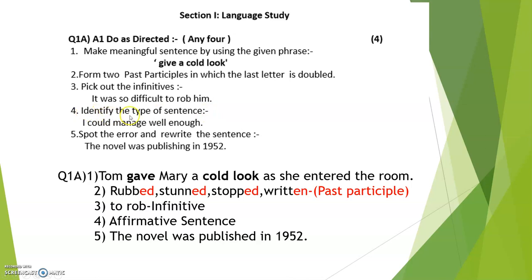Next, identify the type of sentence. We have already done types of sentences — we did imperative earlier. Now let's see: 'I could manage well enough.' This sentence is just a simple statement. Is there any negative word in this? No, there is no negative word. If there is any negative word then it will be a negative sentence, but since there is none, it is an affirmative sentence. Remember: if there is no negative word and it is just a statement, it is affirmative — you can also say assertive, which can be negative or positive.